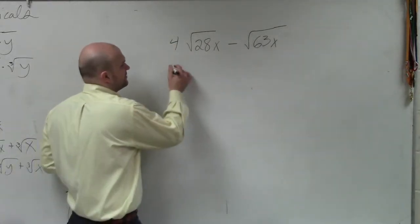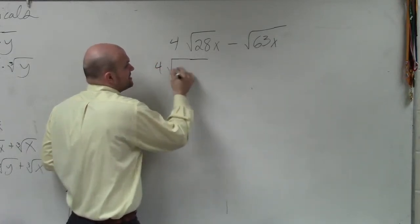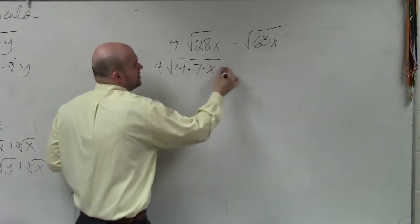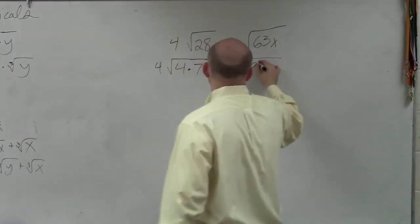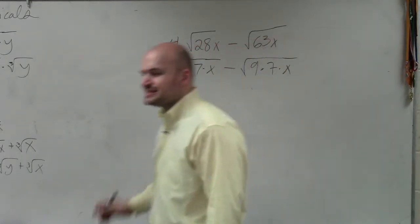Well, I can rewrite this as the square terms. I can rewrite this as 4 times 7x minus 9 times 7 times x. Does everybody see what I did?